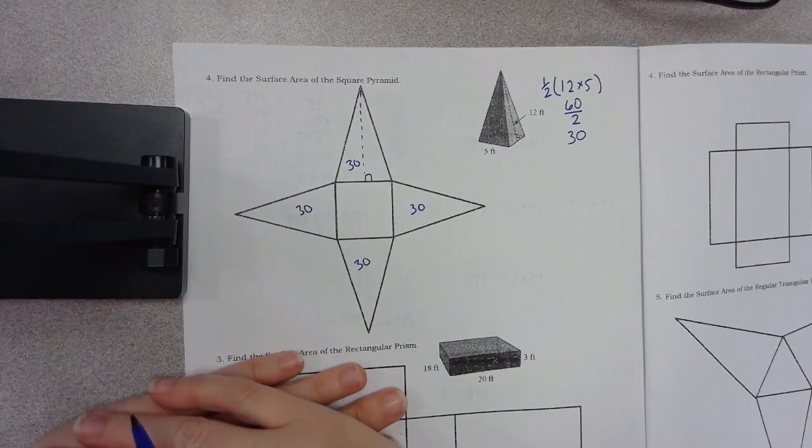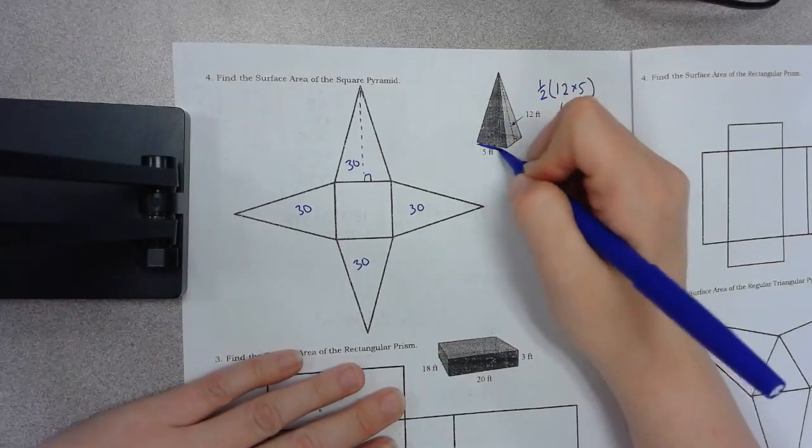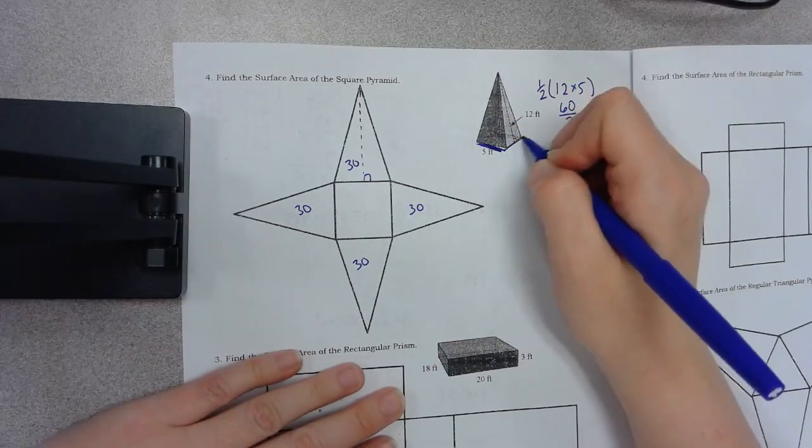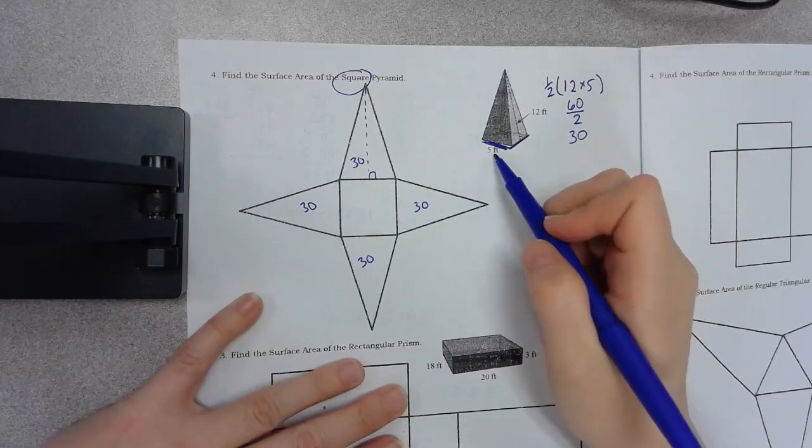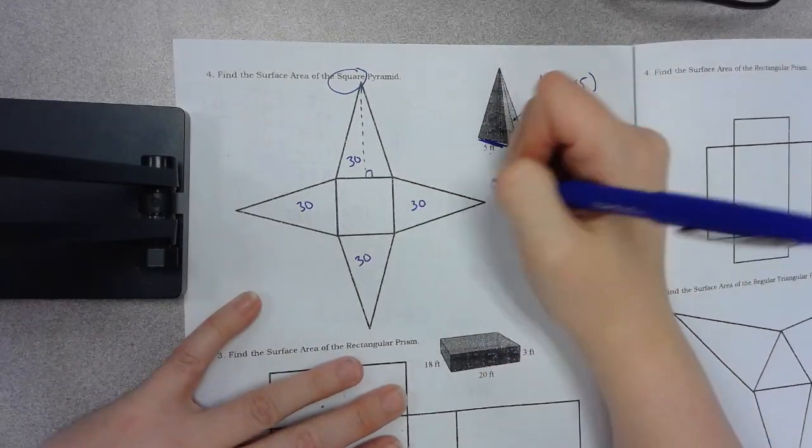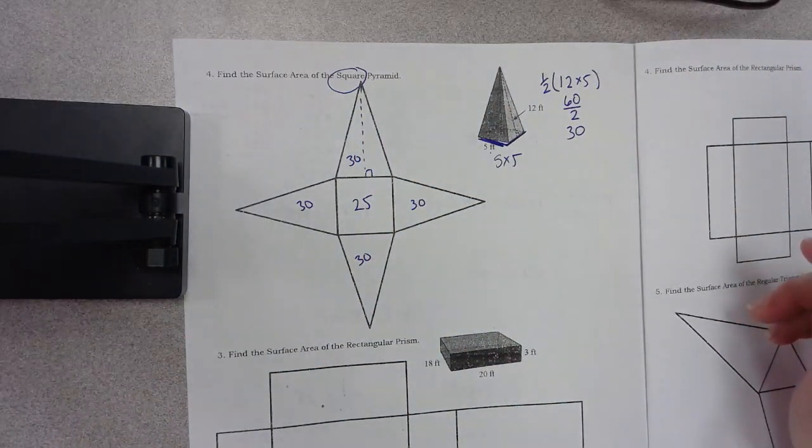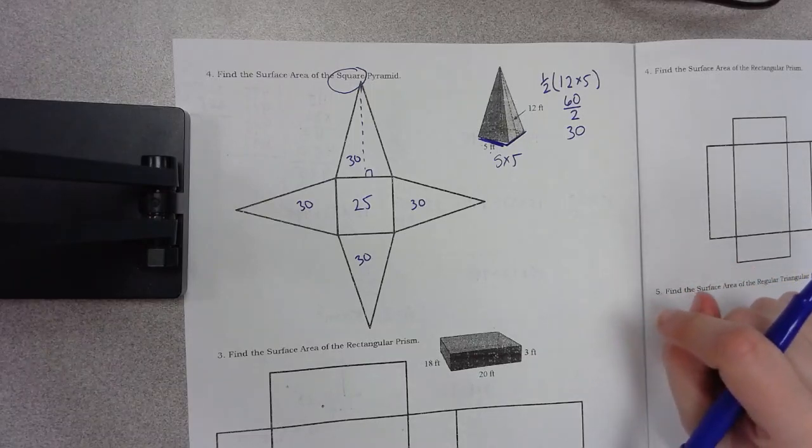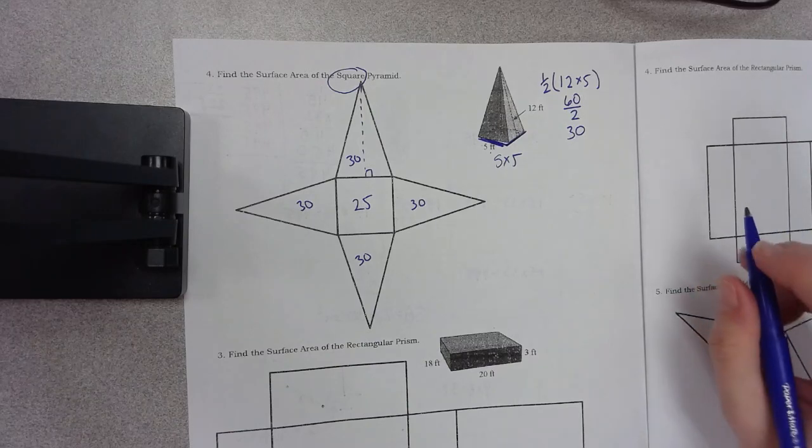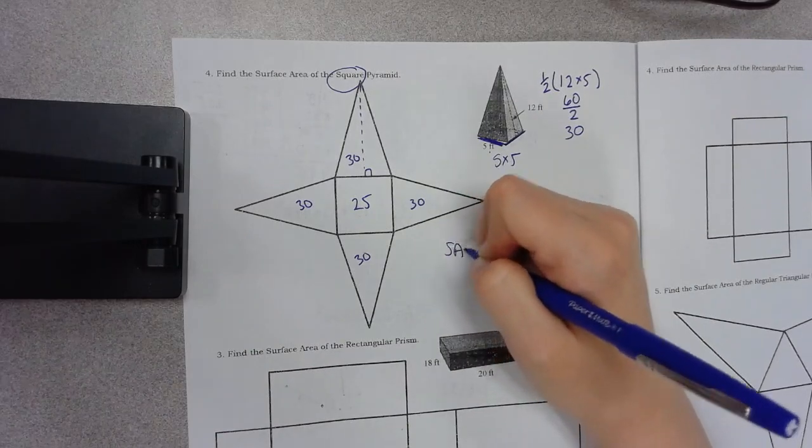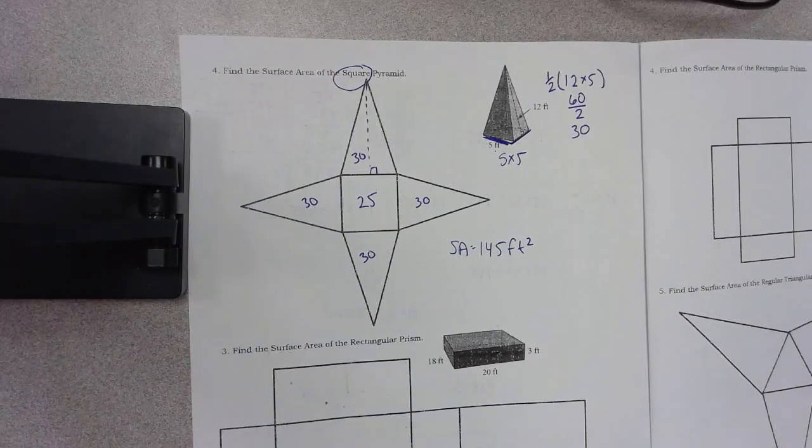And then the one in the middle, this is a side and this is a side. It's a square. And if it's a square, you might be saying, well, there's only one 5 listed. How do I know? Well, because it's a square. So 5 times 5 is 25. So if I add 30 plus 30 plus 30 plus 30, I get 120 plus 25. Pause it if you need to. And the surface area is 145 feet squared.